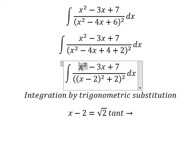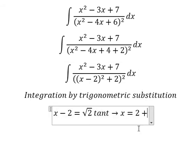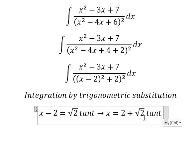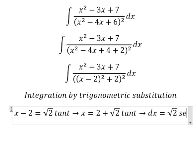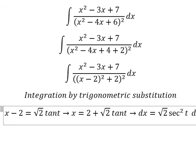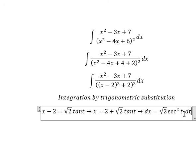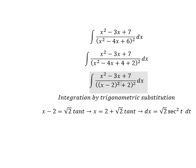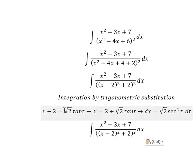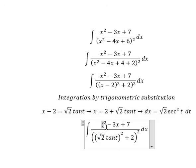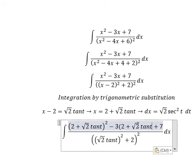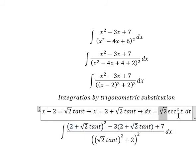Next, because we still have x, we put negative 2 to the right. Then we take the first derivative of both sides. So we have the square root of 2 times sec²(t) dt. We substitute: x changes to this expression, and dx changes to this expression.